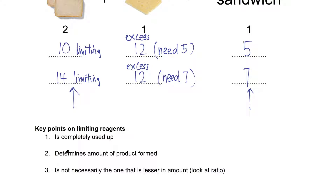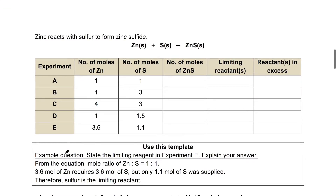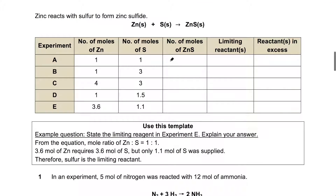Now let's look at some examples using chemical equations. Over here, zinc reacts with sulfur in a 1:1 ratio. In Experiment A, if I have one mole of zinc reacting with one mole of sulfur, just nice, I will get one mole of zinc sulfide. In this case it doesn't make sense to talk about limiting reactants because they react in exactly the correct ratio — both are limiting and there is nothing in excess, meaning if I increase the quantity of both I can make more zinc sulfide.